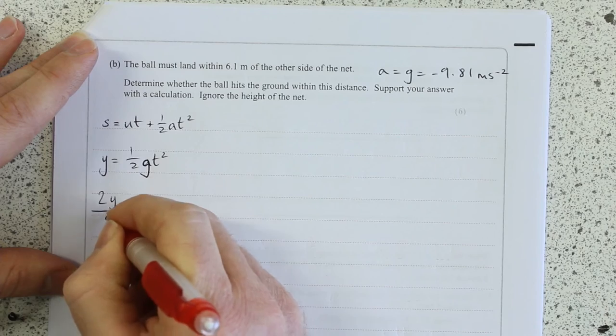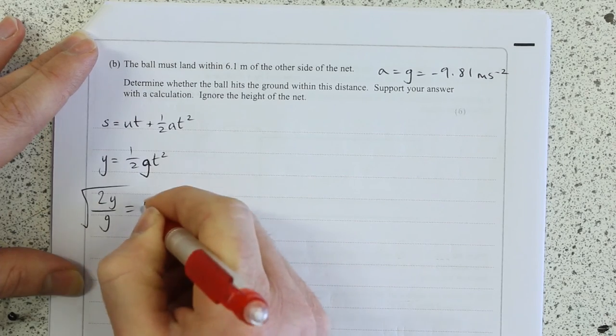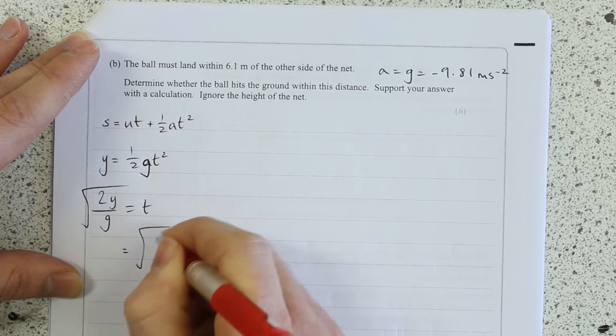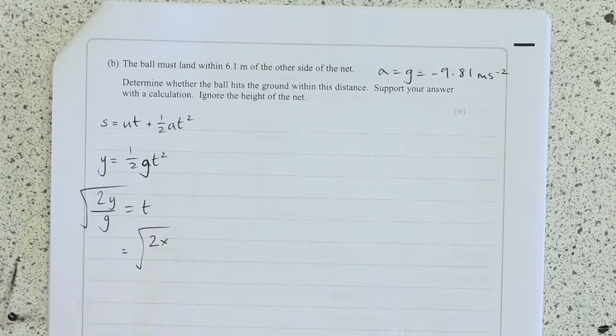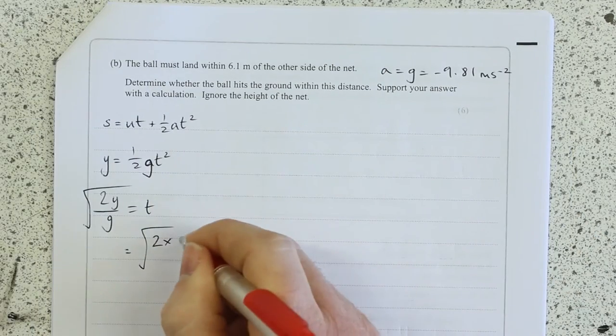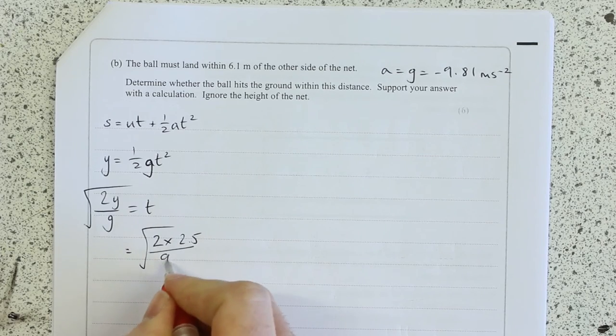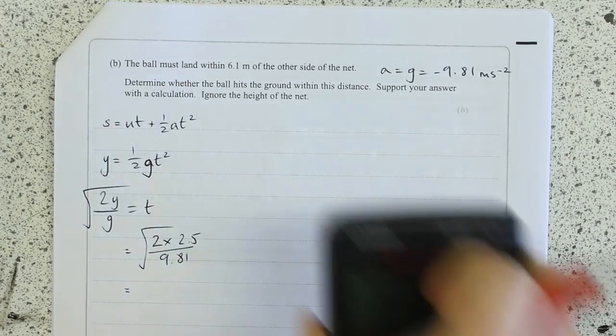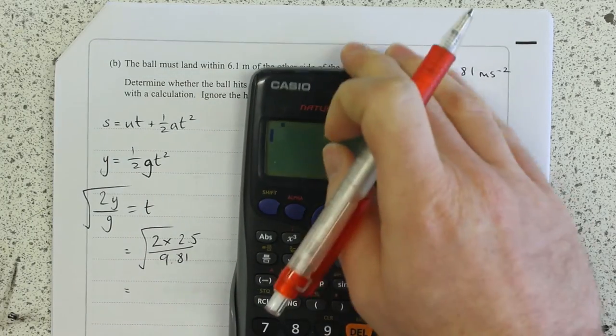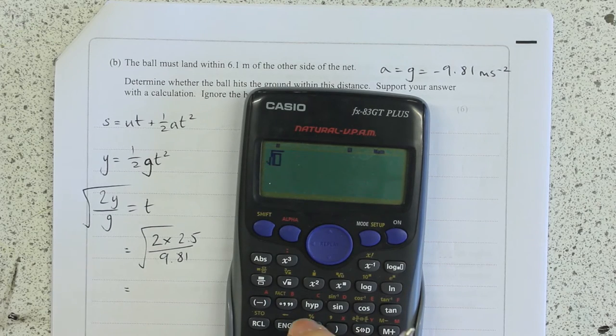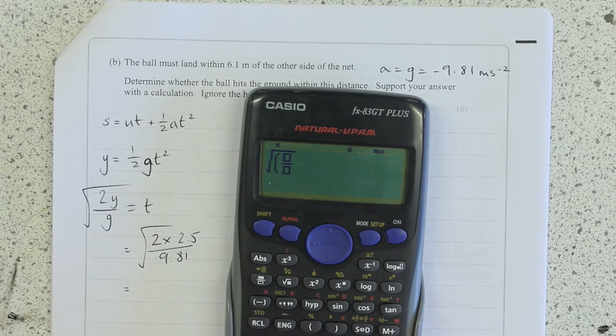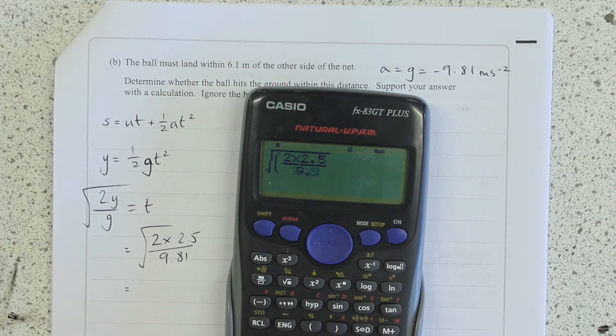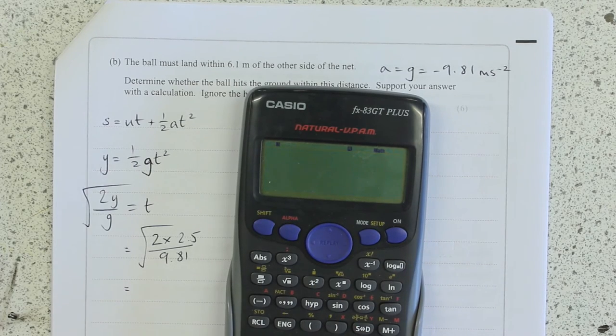So 2Y over G rooted is T. So plug in all my numbers, root of 2 times 2.5 over 9.81, and skip the minus because you can't root of minus. Unless you want to work in imaginary numbers, of course, but we don't. 2 times 2.5 over 9.81, and yeah, it's root in a lot of it. I didn't really need to do the brackets, but I've done it anyway.